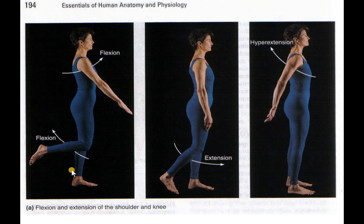Human movement. We give flexion at the arm, so it's going to go in this direction. When it does, that is considered flexion. When you go back, that is extension.